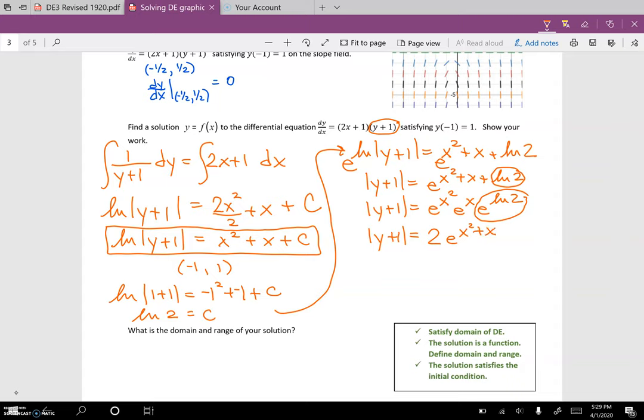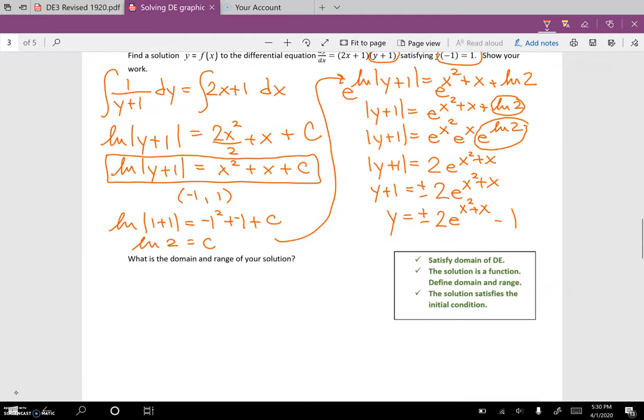That's some crazy algebra right there. Now, when we undo absolute value, we get plus or minus 2E to the x squared plus x. And don't forget to subtract that one. Wow. Pretty cool. Don't you feel proud of yourself for being able to do that? Now, I do have to check. Is it going to be the positive solution or is it going to be the negative solution? So remember, my initial value is negative 1, 1.